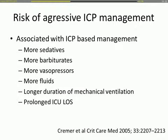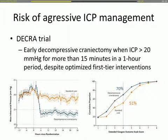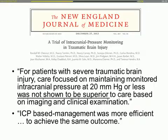The retrospective paper by Kramer was one of the first to suggest that being too aggressive can also be bad without improving outcome. The DECRA trial on early decompressive craniectomy showed that even very brief episodes of elevated ICP led to worse outcomes, illustrating that being too aggressive at 20 mmHg may make things worse rather than better.